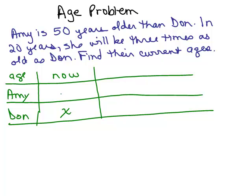So how old would she be right now? She would be X plus 50. That's always true. She's always 50 years older, it doesn't matter what year it is. Now what would their ages be in 20 years? In 20 years she's still 50 years older. But we have defined a variable here, X, for Don's age right now.